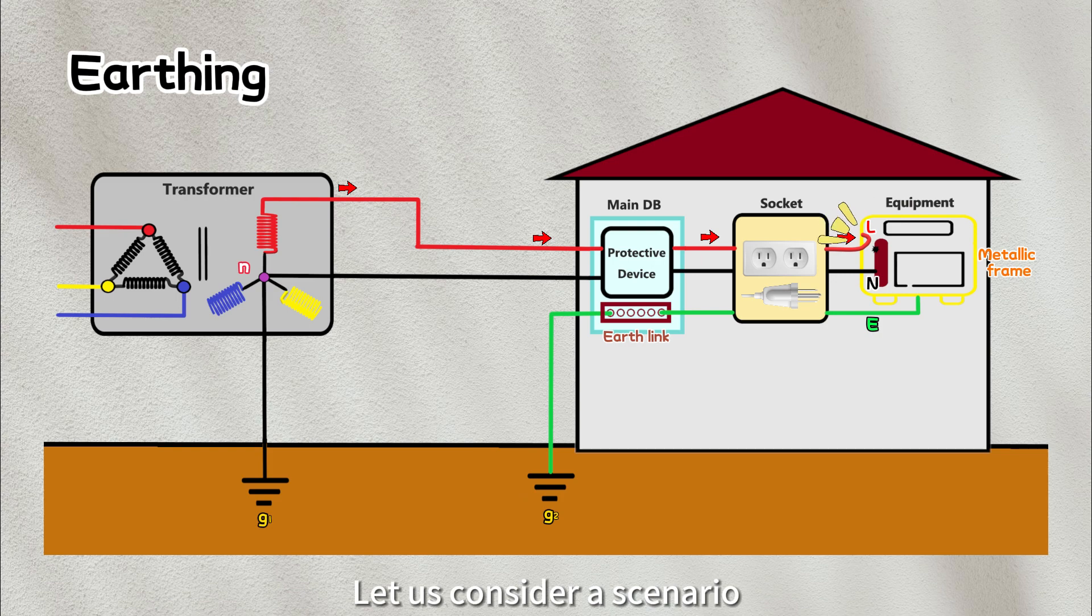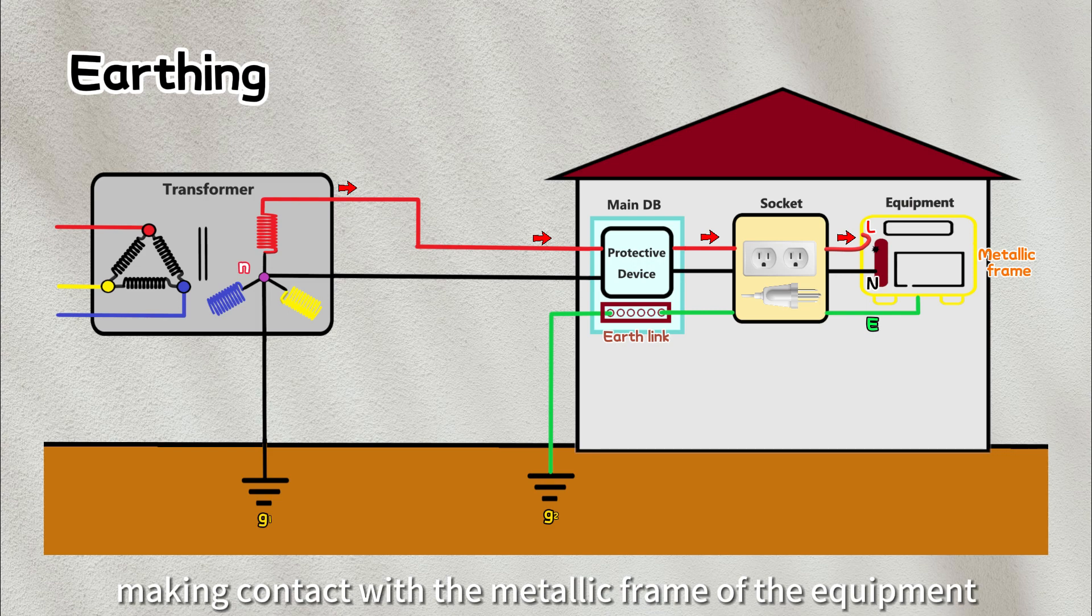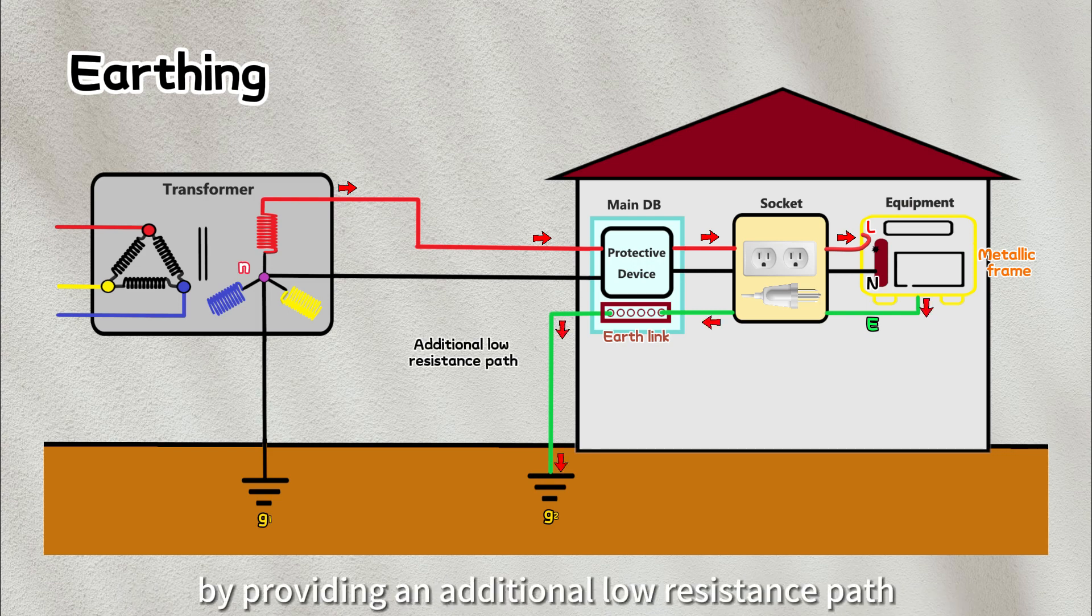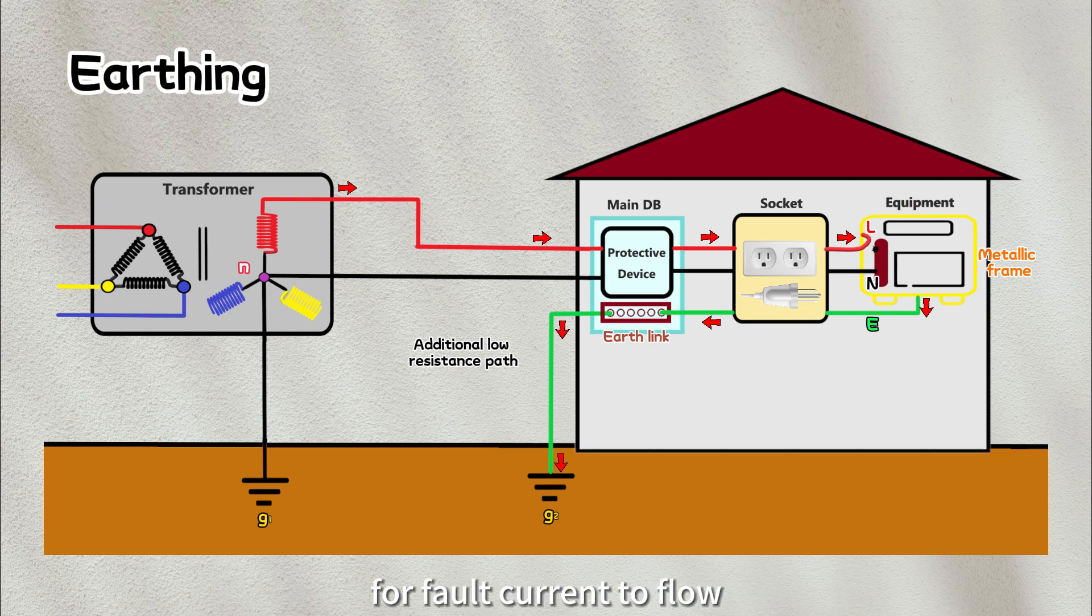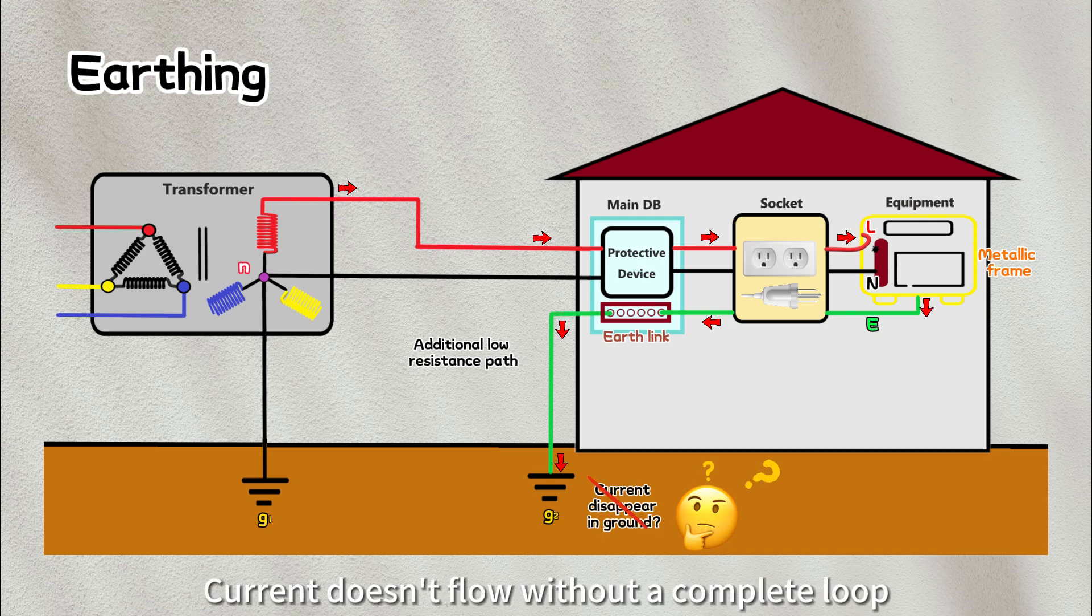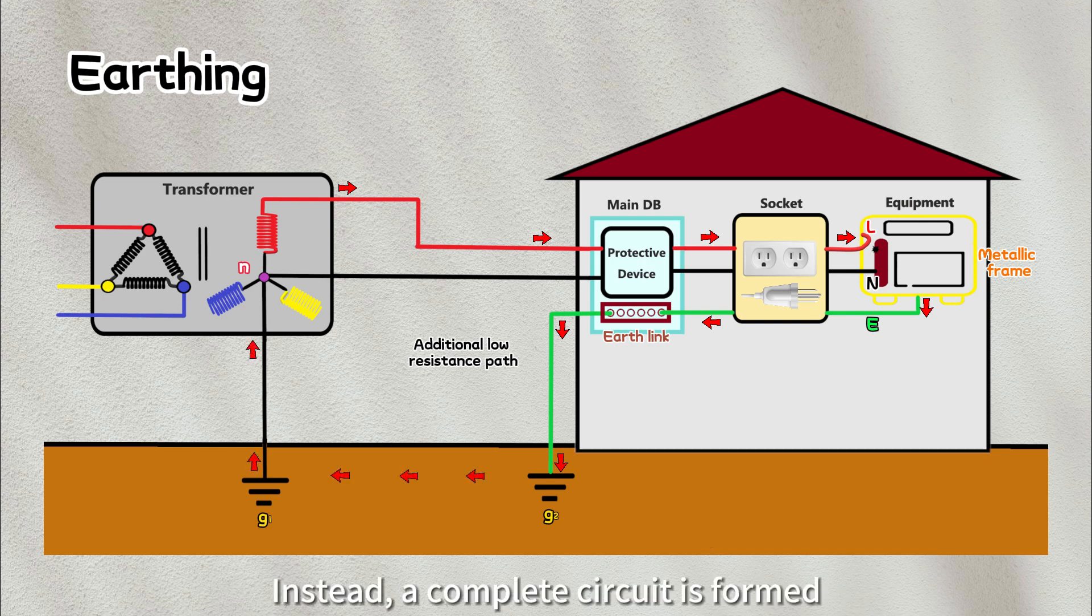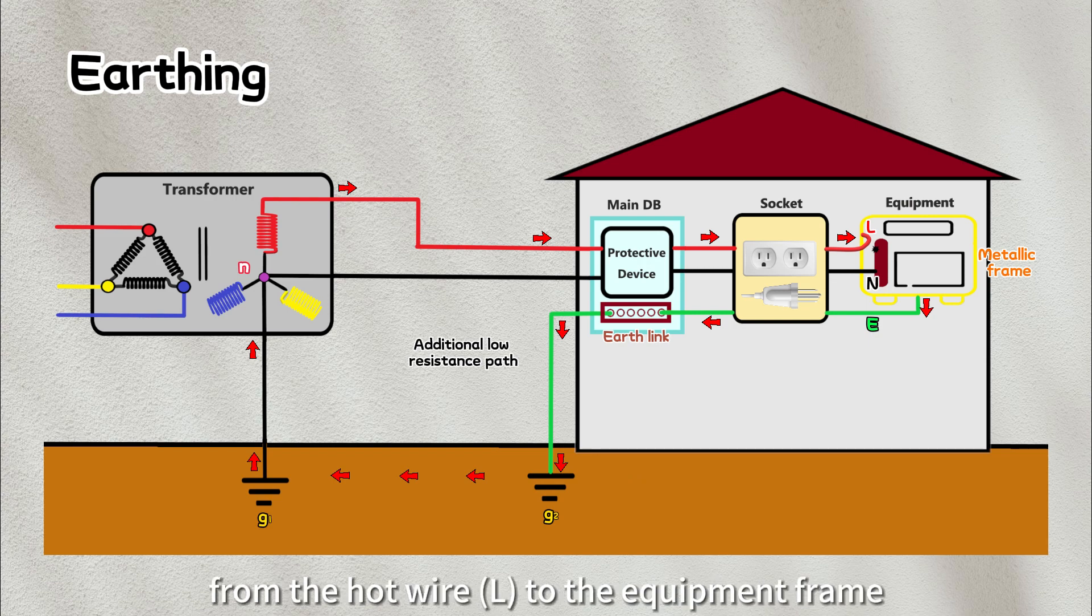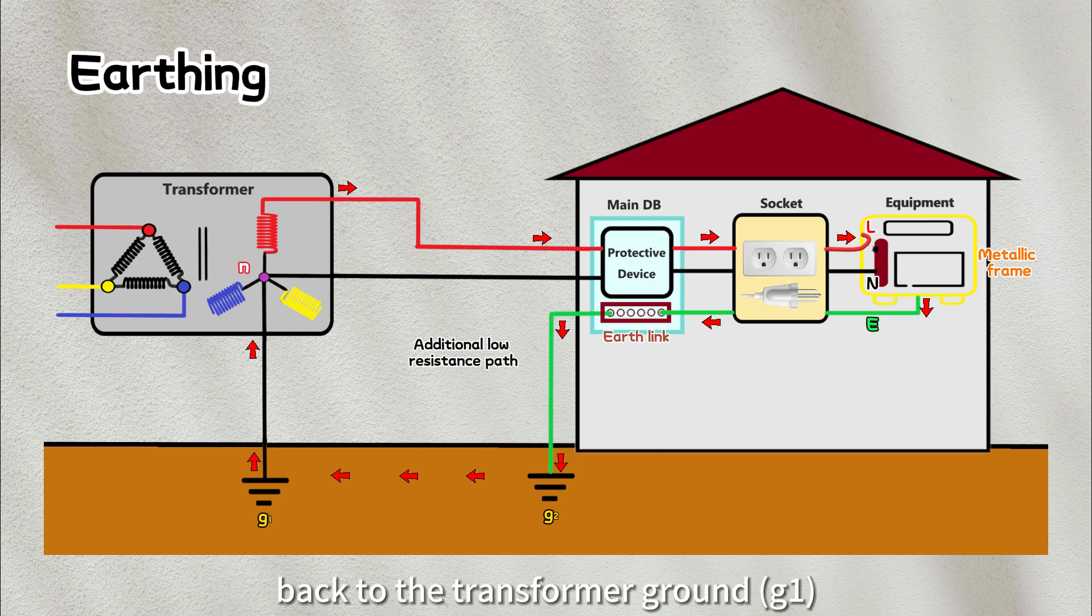Let us consider a scenario where the live wire becomes loose or breaks, making contact with the metallic frame of the equipment. Now the earth wire steps in to lower the risk of electrocution by providing an additional low resistance path for fault current to flow. You might wonder if all the fault current will simply flow through the earth wire into the ground and disappear. The answer is no, current doesn't flow without a complete loop. Instead, a complete circuit is formed from the hot wire to the equipment frame, then through the earth wire to the earth rod into the ground, back to the transformer ground, and finally to the neutral point.